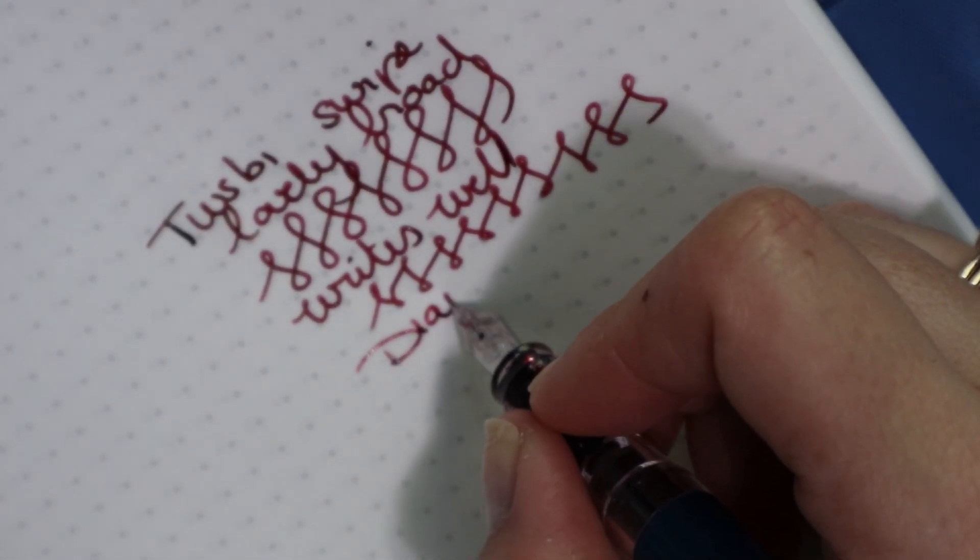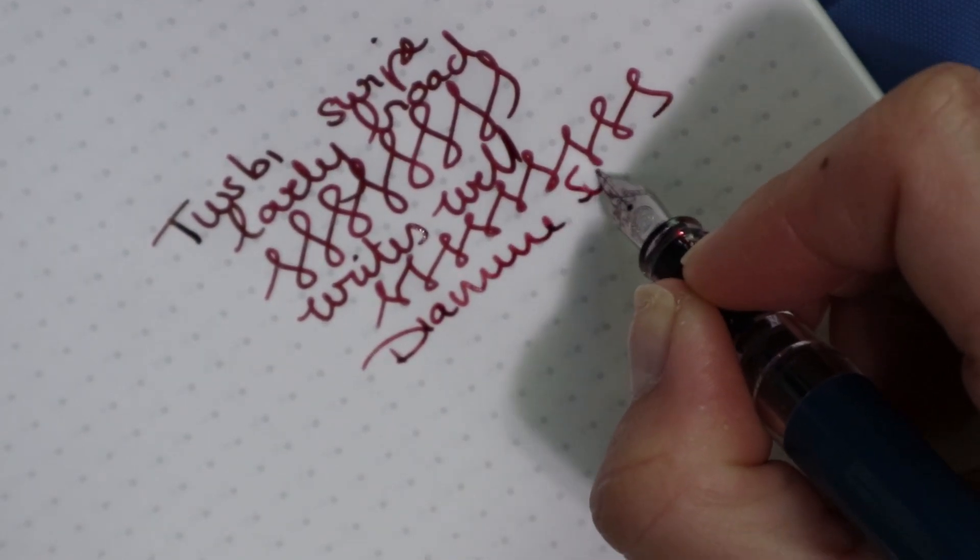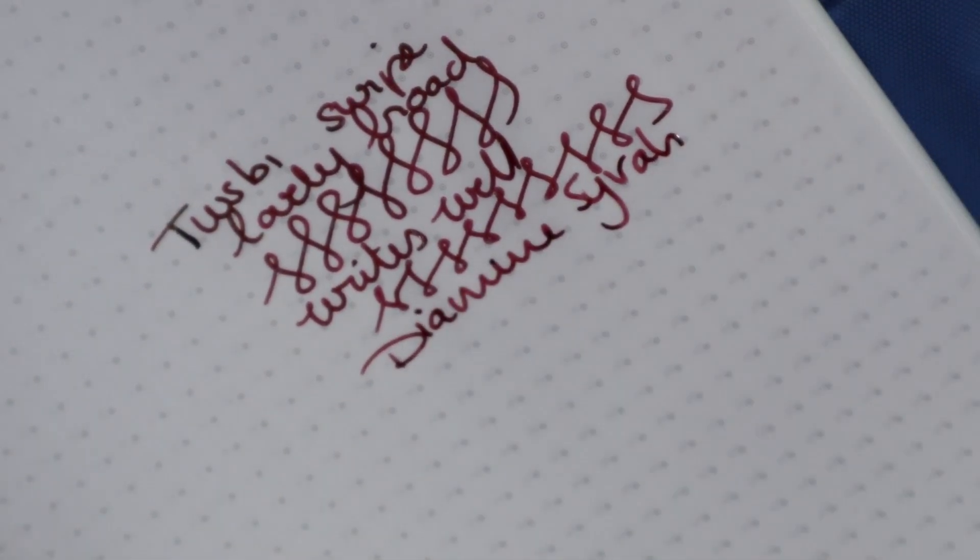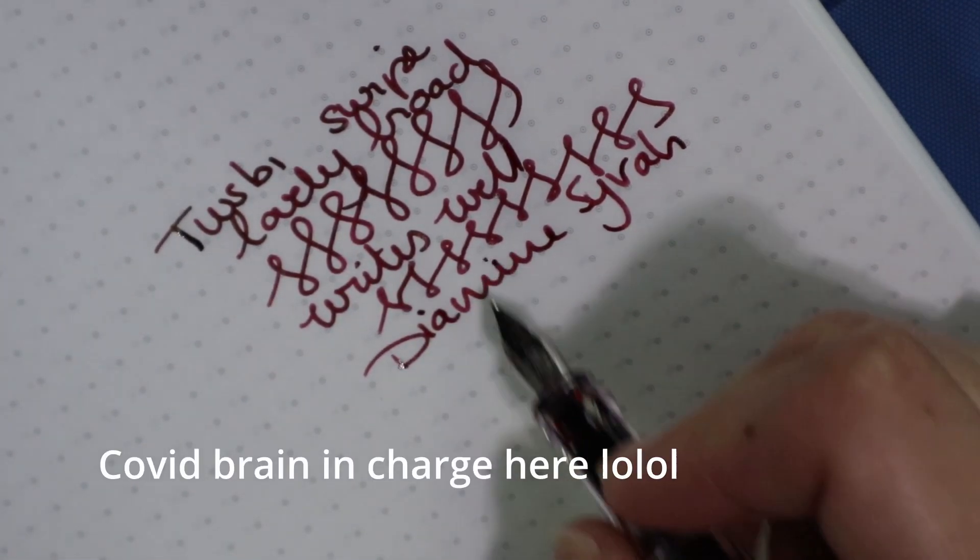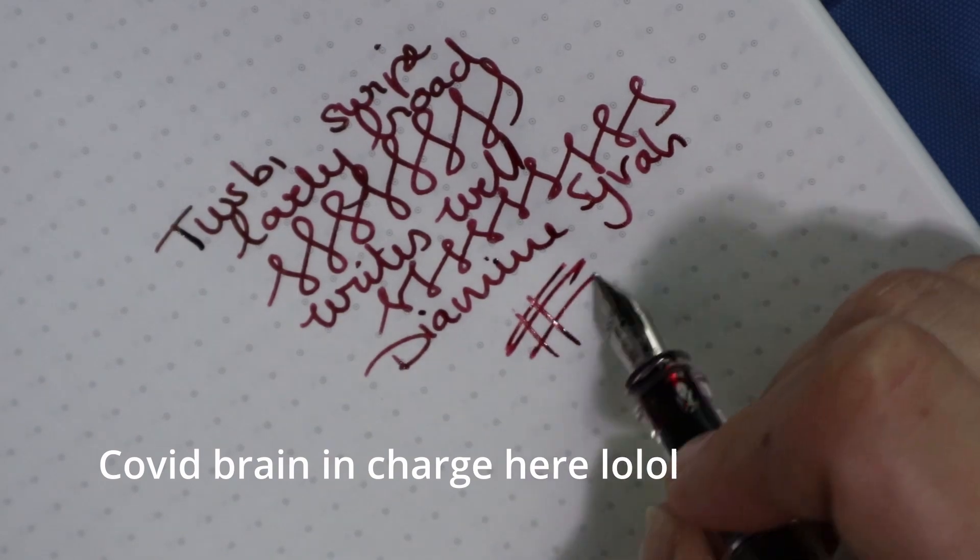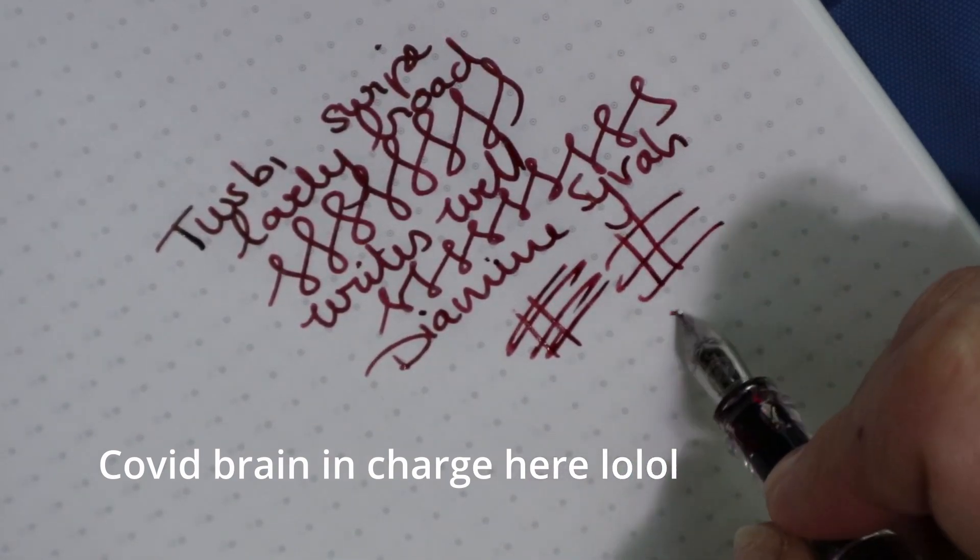Ink is Diamine Syrah, which is the worst Sailor Oku-yama. And I don't think I'll be inking it again. James really likes this ink. But we are different. I do not really like this ink.